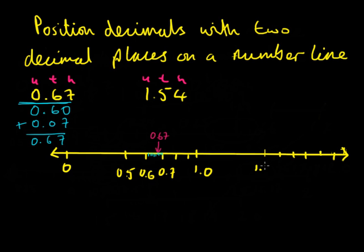So we've got 1.5, 1.6, 1.7, 1.8, 1.9 and 2.0. 1 and 5 tenths, 1 and 6 tenths, 1 and 7 tenths.